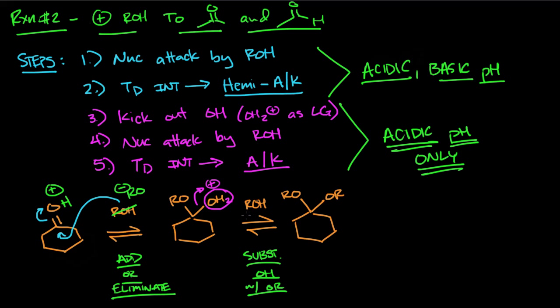Base can't do that - only the acid can do that. So that's why the formation of the ketals and the acetals only happens at acidic pH, because you need to kick out the OH. OH is a terrible leaving group, but if you protonate it, it can become a good leaving group.